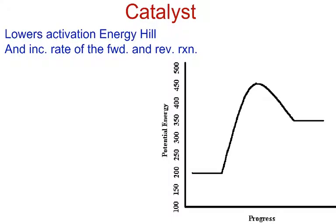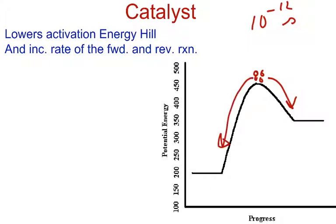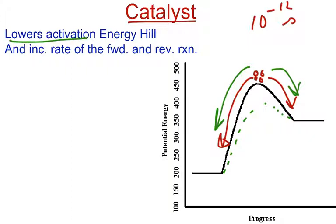Catalyst. We talked about it briefly. We know that up here we have our activated complex — that molecule that is temporarily formed, which has a very, very short lifetime; some have lifetimes of 10 to the negative 12 seconds, very hard to isolate. If reactants have enough energy, they'll go to this side and make products; if they don't, they will fall back to the reactants. Sometimes we want to speed up our reaction and we add a catalyst. A catalyst lowers our activation energy hill, speeding up the process in both directions — it goes this way faster and also that way faster.